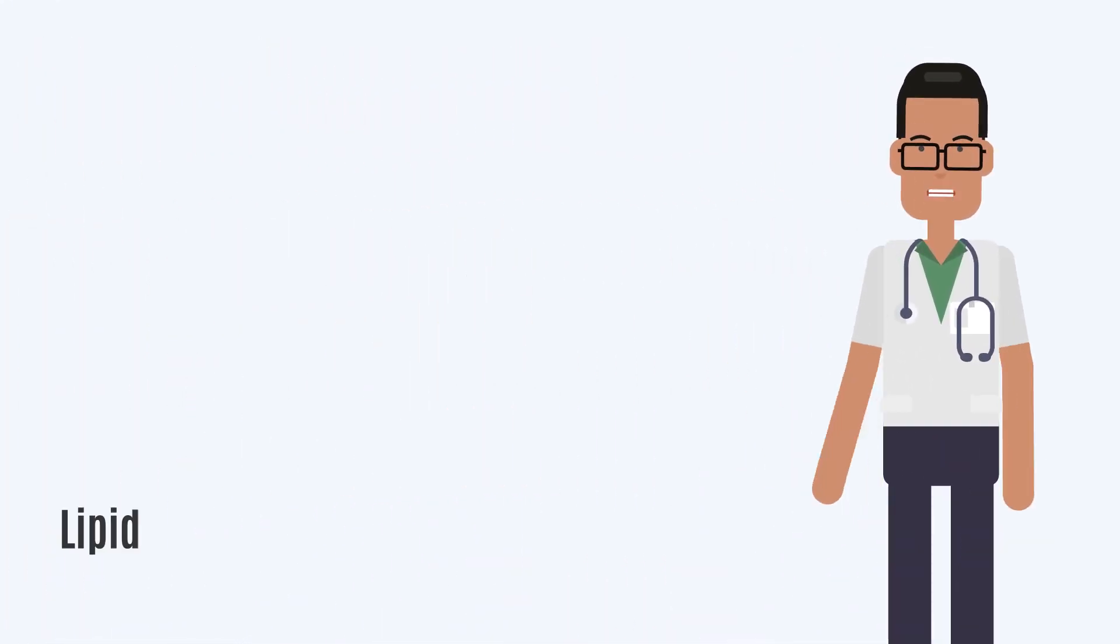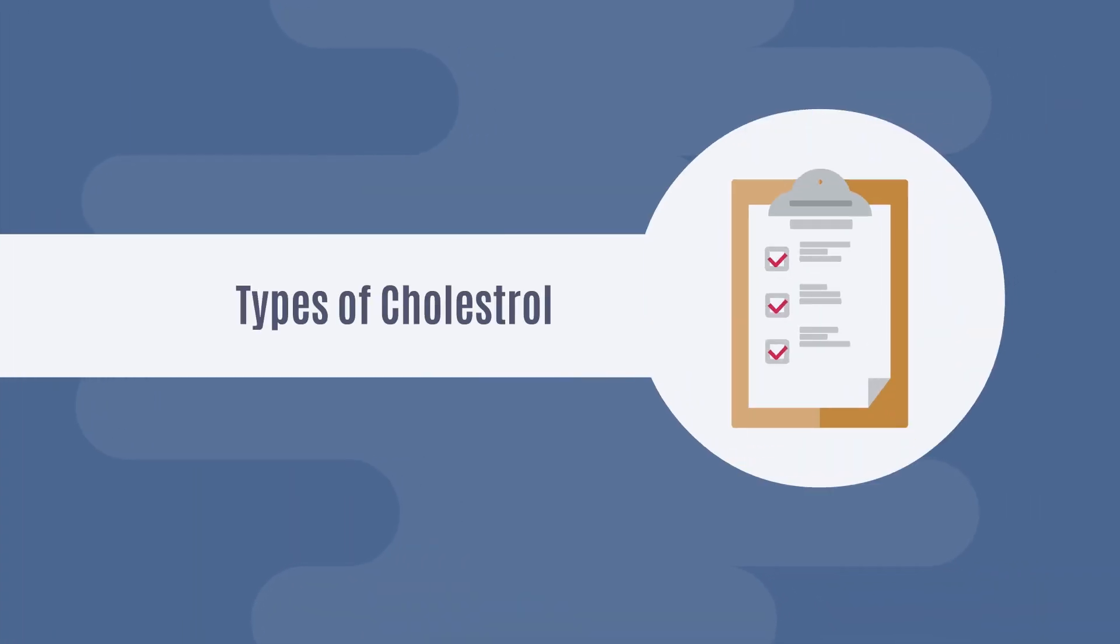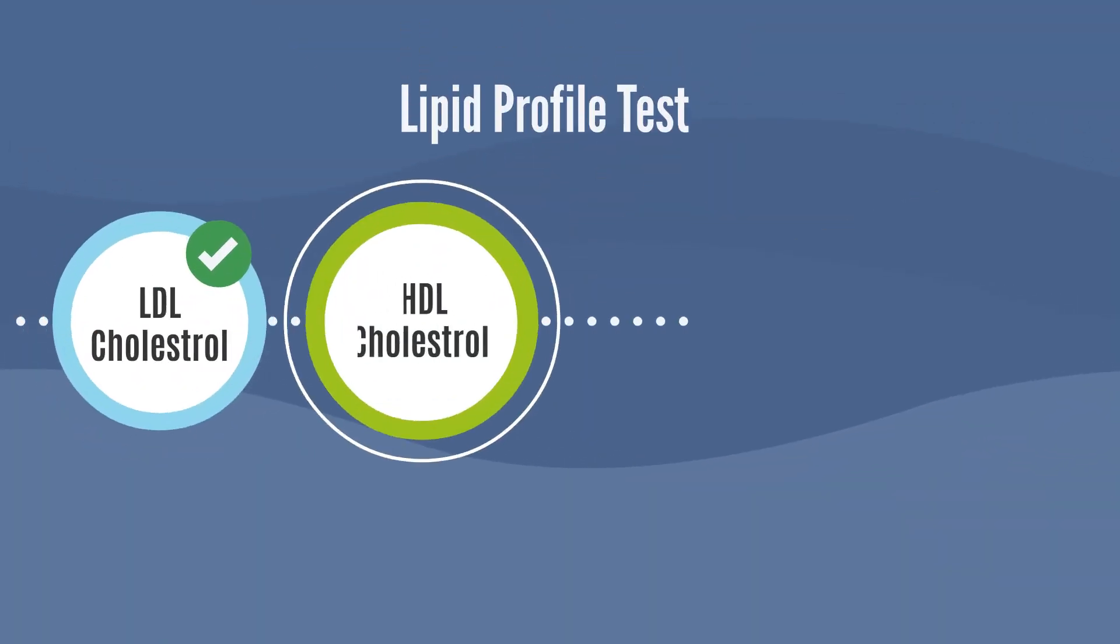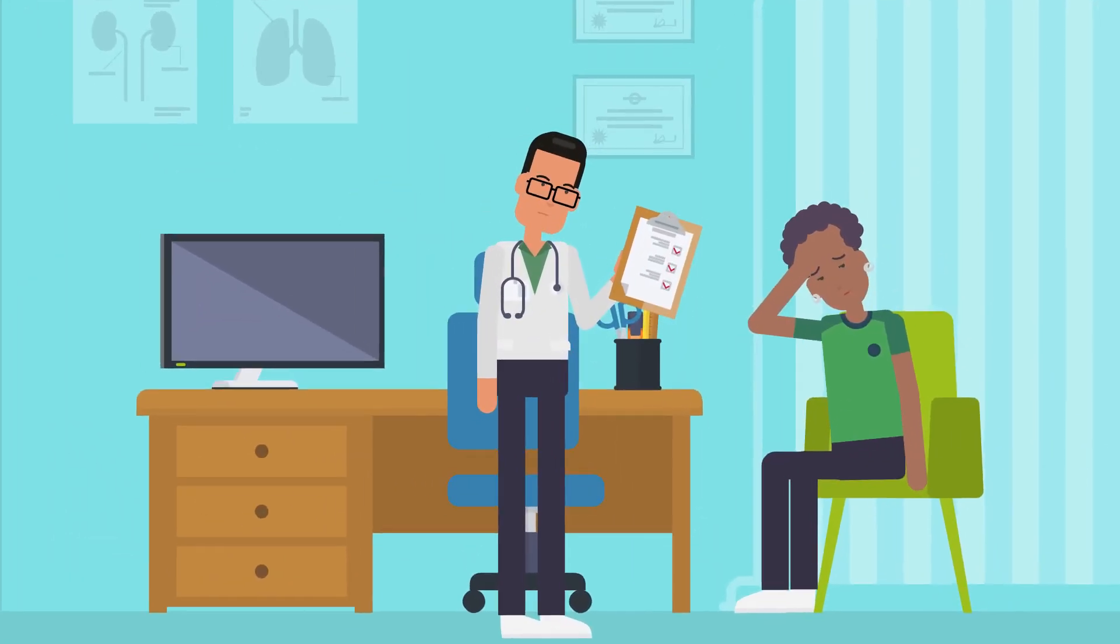Your doctor will order a blood test called lipid profile that measures all the types of cholesterol in your blood. A full lipid profile measures LDL cholesterol, HDL cholesterol, total cholesterol, and triglycerides. Lipoprotein is another test your doctor may check to better understand your risk for stroke, heart attack, or other diseases.